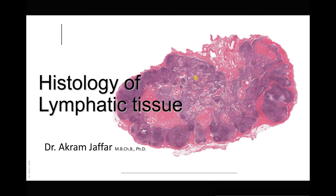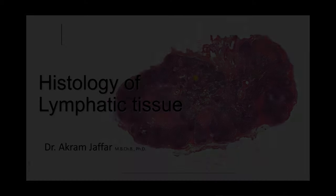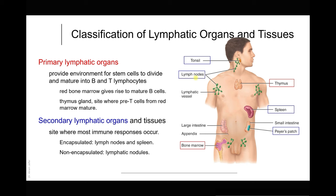In this session I'm going to deal with the histology of the lymphatic tissue. Before dealing with the histology, let's classify the lymphatic organs and tissues. There are primary lymphatic organs that provide an environment for stem cells to divide and mature into B and T lymphocytes. The red bone marrow gives rise to both T and B lymphocytes, but B lymphocytes mature in the red bone marrow while T lymphocytes migrate to the thymus gland to become mature.